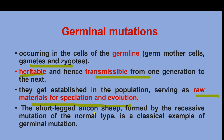A classical example of germinal mutations is the Ancon sheep. This short-legged sheep breed was formed by a recessive mutation from the normal type. If you breed such animals, a hybrid system results. This is a classical example of germinal mutations.